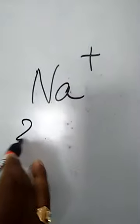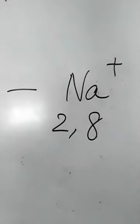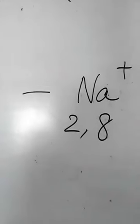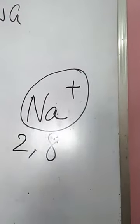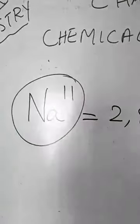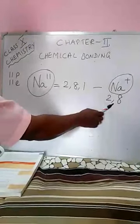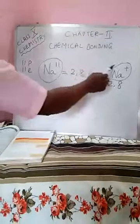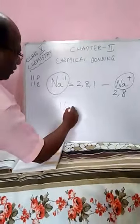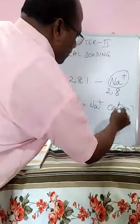By losing this one electron, sodium is going to attain Na⁺. The electronic configuration of Na⁺ is 2, 8 — it has attained the noble gas configuration. So Na⁺ is what is called an ion, whereas the original Na is called an atom — a neutral atom. Na, by losing one electron, becomes Na⁺. This is known as a cation.